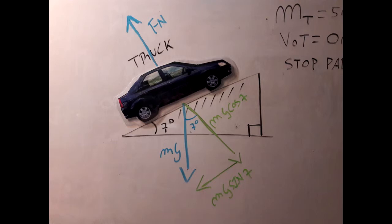As you can see, the y component of Mg is Mg cosine of 7, that is going to counteract the normal force. And the x component is Mg sine of 7.